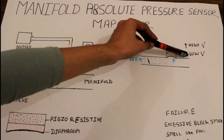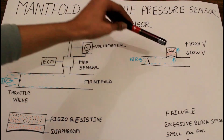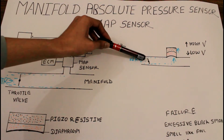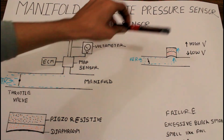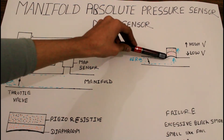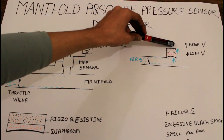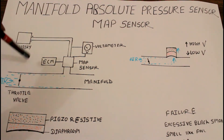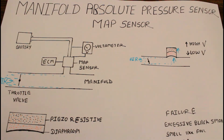In the condition of full open throttle, the highest deflection is present in the diaphragm, so the highest voltage is sent to the ECM. The ECM then calculates the amount of air present in the manifold and accordingly sends the right amount of fuel into the engine cylinder so that proper combustion takes place. That's how the MAP sensor works.